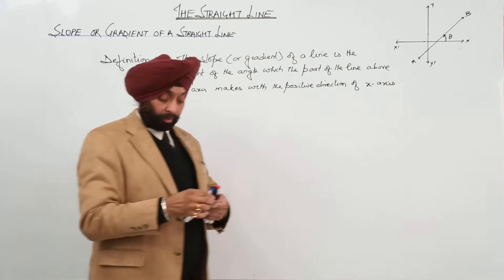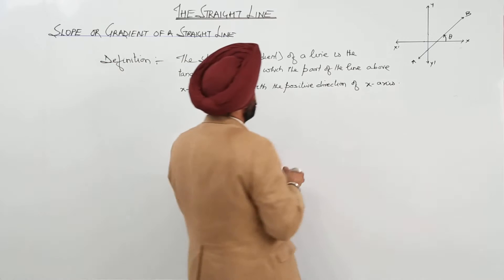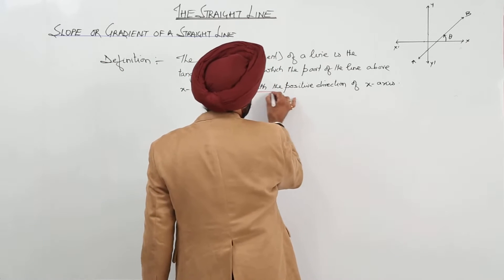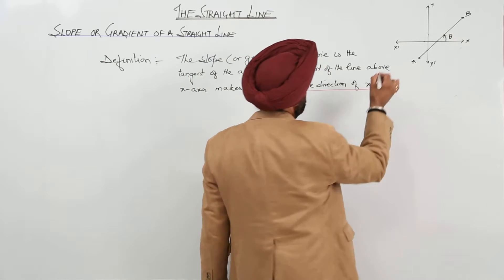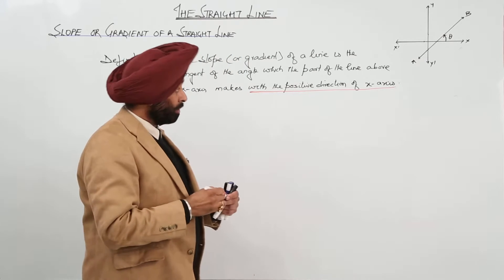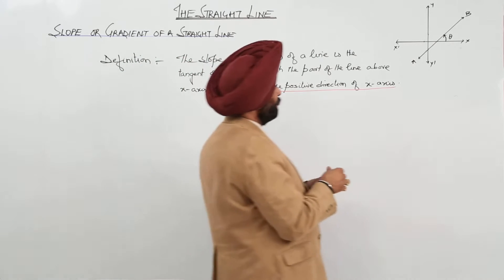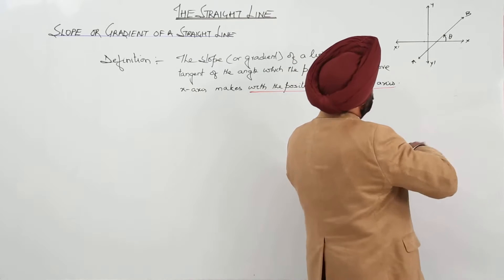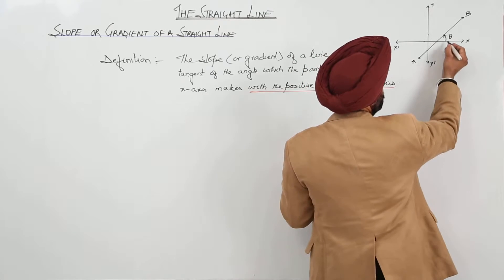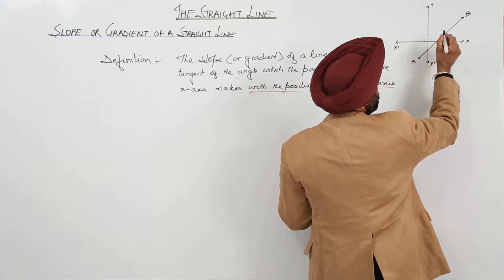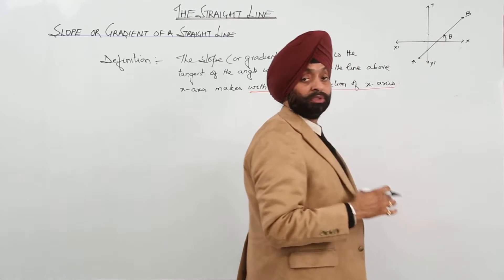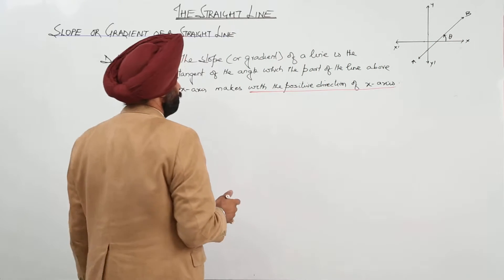Now, for finding the slope, the main content is this one: with the positive direction of x-axis. This is the main thing. Now, here in this figure, from the positive direction, starting from here and covering this much distance, this is called the slope. This is theta.